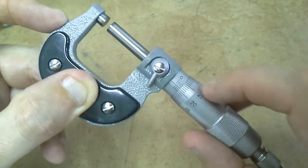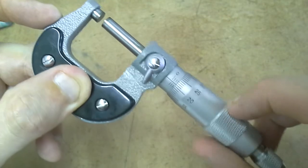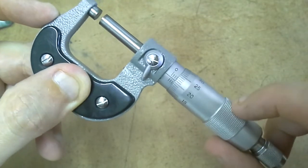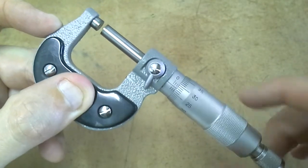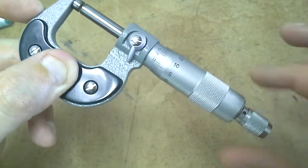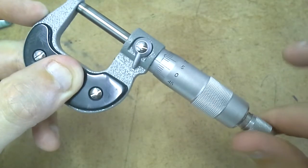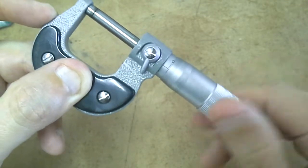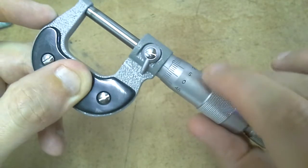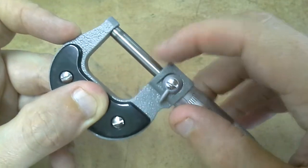If you turn it around here you can actually damage the micrometer and it won't be calibrated, so just this ratchet here, that clicking sound, that stops you putting any extra force here and damaging here.